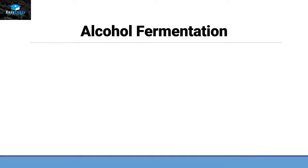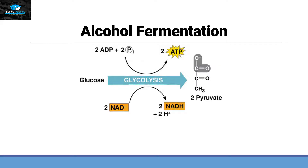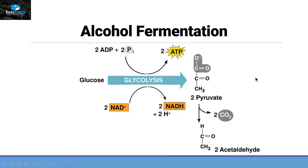In alcoholic fermentation, the first step is glycolysis, in which a six-carbon compound called glucose converts into a three-carbon compound called pyruvate. In this process, two molecules of ATP and two molecules of NADH are released. Now this pyruvate has a carbon that is released in the form of carbon dioxide, and the rest of the carbon skeleton is called acetaldehyde.